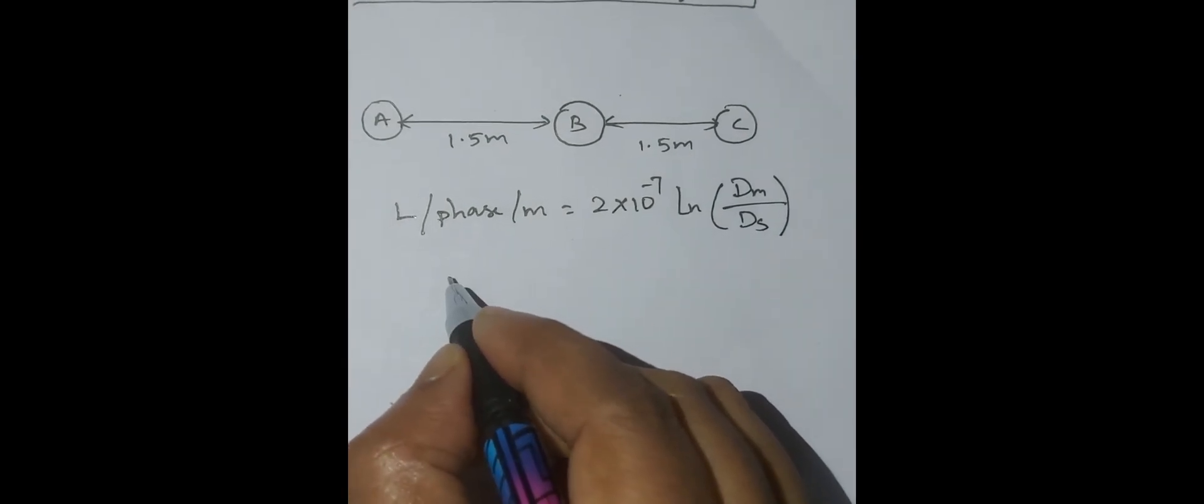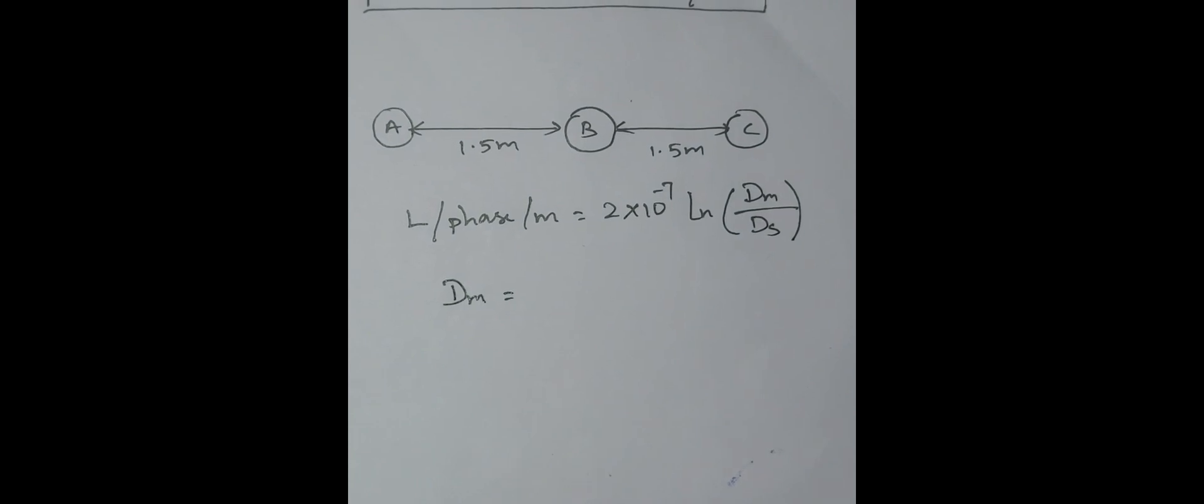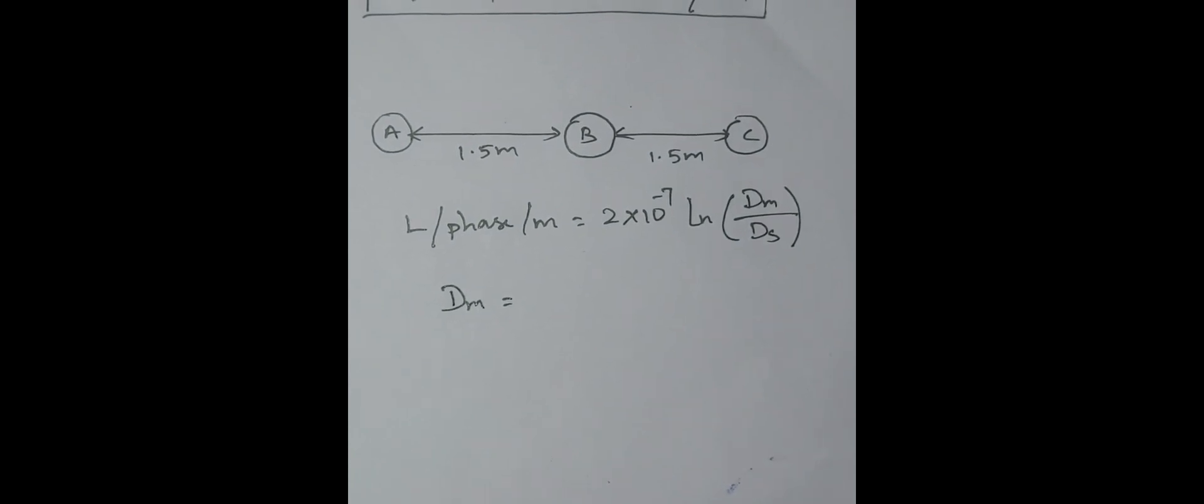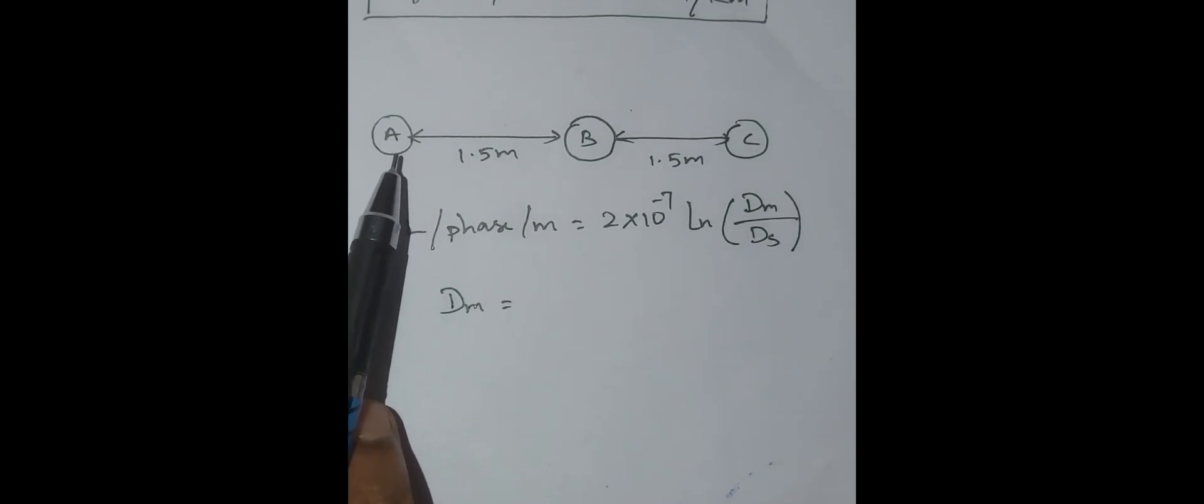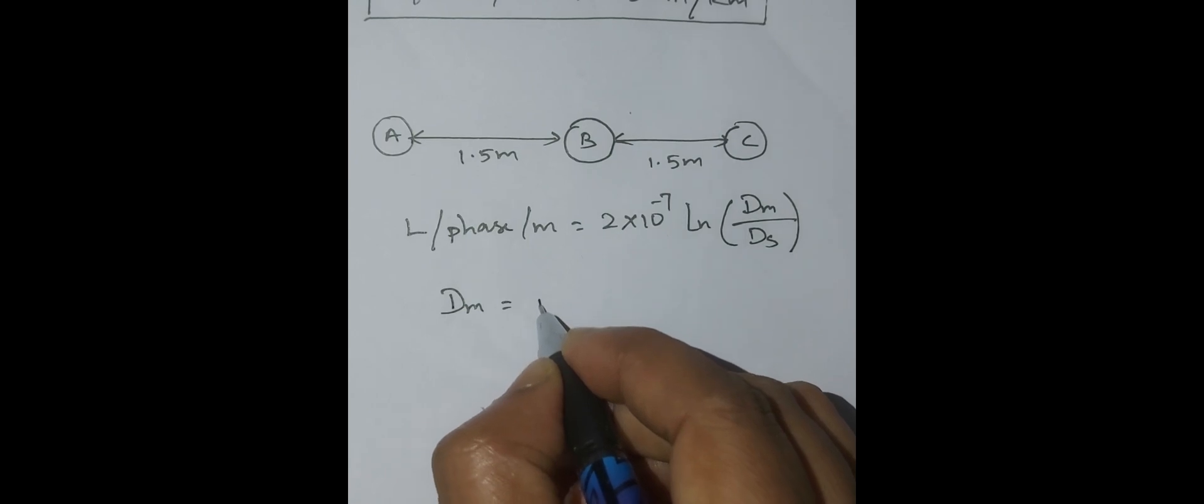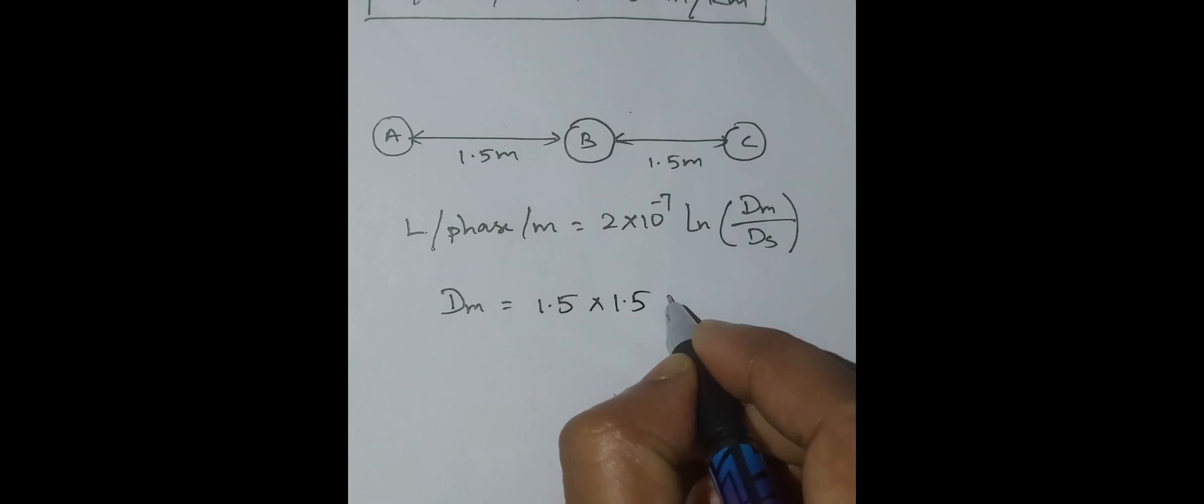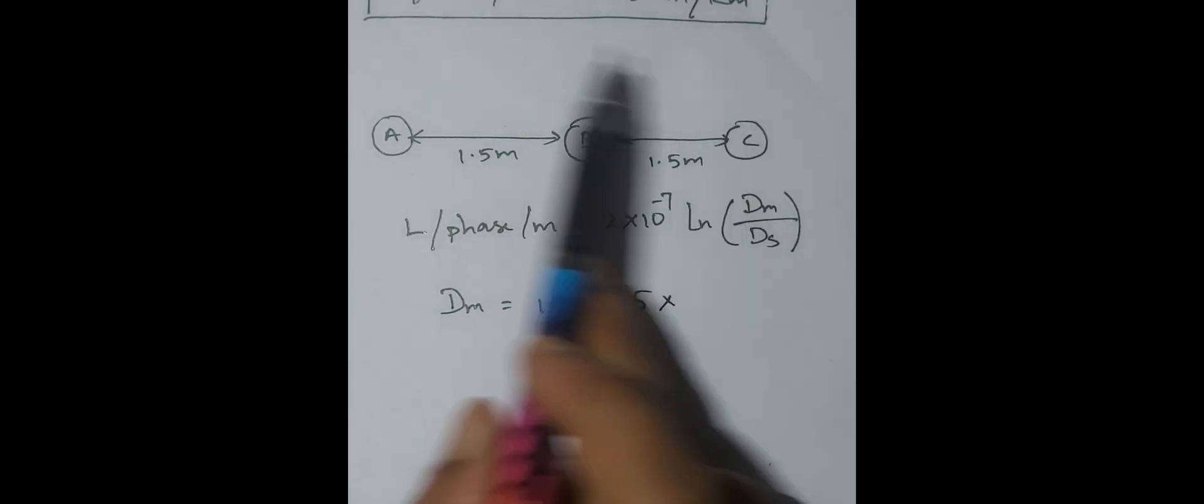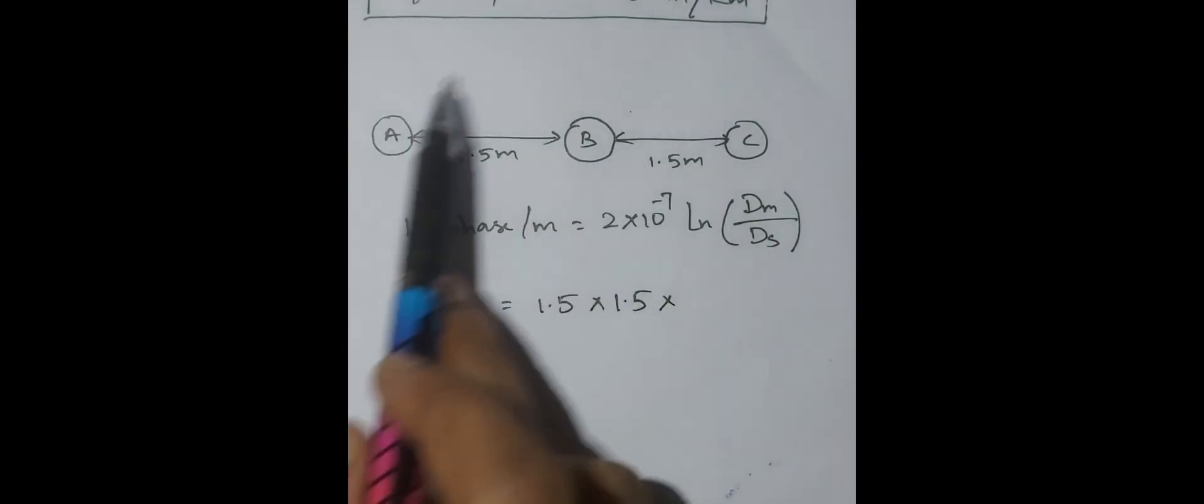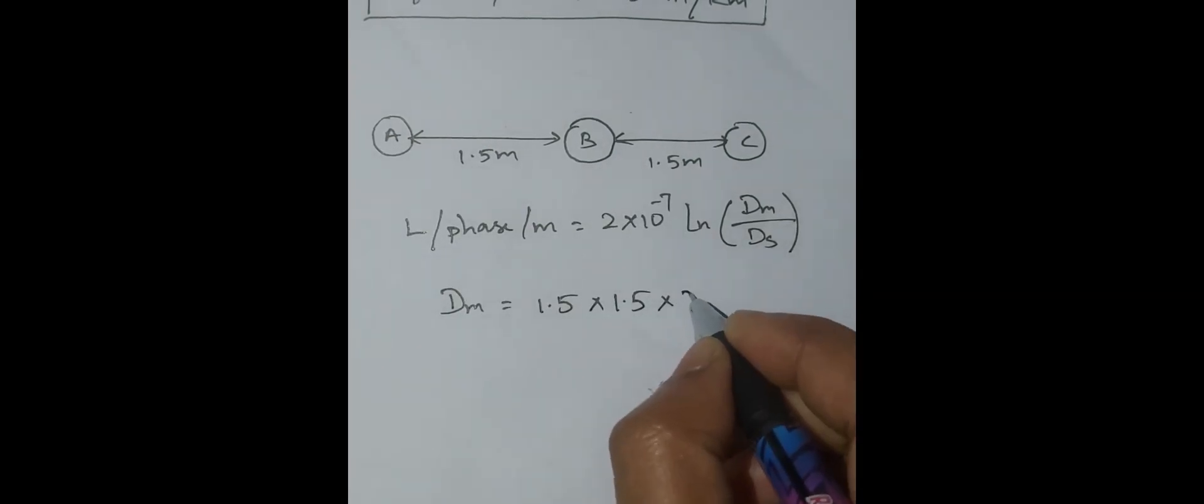DM formula is the mutual distance between the phases. Each conductor and the distance between the conductors. So A to B is 1.5 meter and B to C, A to B is 1.5 meter. So C is 1.5 meter plus 1.5 meter.